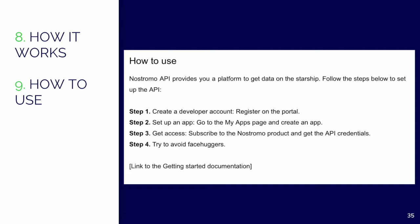'How to use' is a short introduction text with a link to the Getting Started documentation. This section is not a full step-by-step guide — it only provides a general overview of usage. The function of this section is rather to show how easy it is to get started with the API than to provide a full guide for it. I try to keep it short and don't include more than three or four steps here.